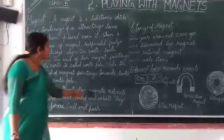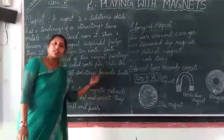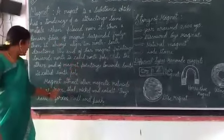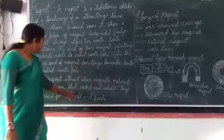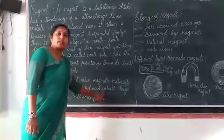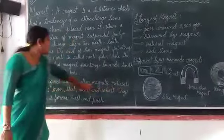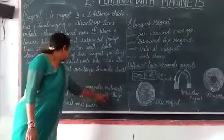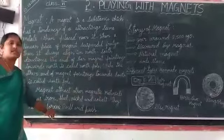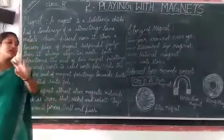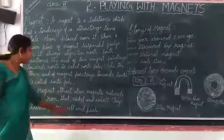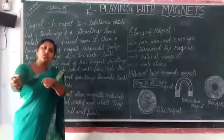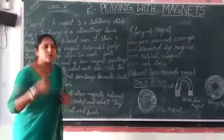Magnet attracts other magnetic materials like iron, steel, nickel, and copper. These materials are attracted to the magnet. The magnet also has two forces. What are they? Pulling and pushing. The magnet is used for both pulling and pushing.